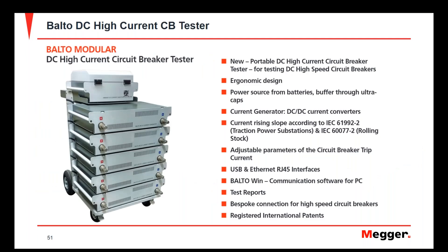Lastly, the Balto DC high current circuit breaker tester is a test set you charge before going out in the field — it operates by battery power assisted by ultra capacitors. It provides a high current DC output for testing DC high-speed circuit breakers, delivering that power-dense output very quickly to test those high-speed circuit breakers within the required time. This instrument is compliant with IEC 61992-2 for testing high-speed DC circuit breakers, and it operates off the Balto Win software for easy user interface and test report production.